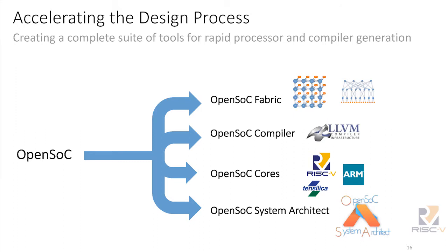The grand vision is that the whole OpenSOC tool flow uses OpenSOC Fabric as the stitching network. We have the compiler where any custom instructions you add get added to the LLVM compiler. We have the cores — currently RISC-V, but nothing stops you from adding other processor cores like ARM or Tensilica. We're trying to keep it as open source as possible, so RISC-V is what we're doing, and it all comes together under the System Architect umbrella.